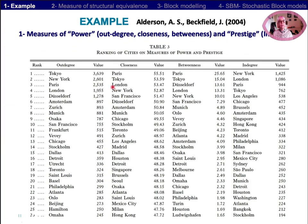First, they measure power. The power is measured by out-degree, with Tokyo first; closeness, with Paris first; and betweenness, with Paris first again. Then, they measure what they call prestige — the in-degree — with New York first, meaning that New York attracts a lot of subsidiaries.